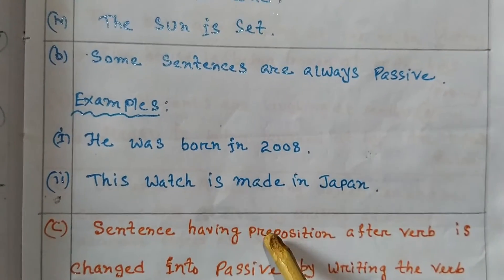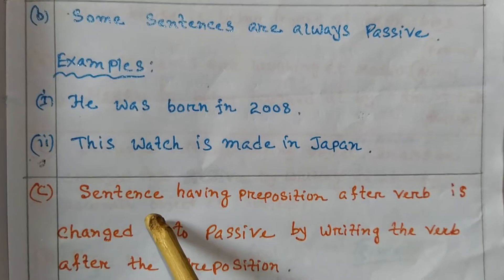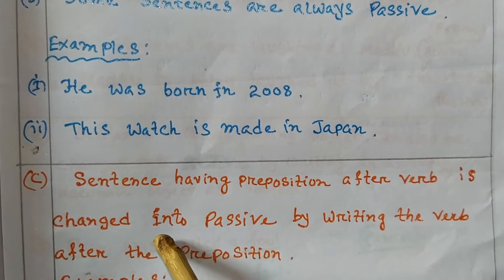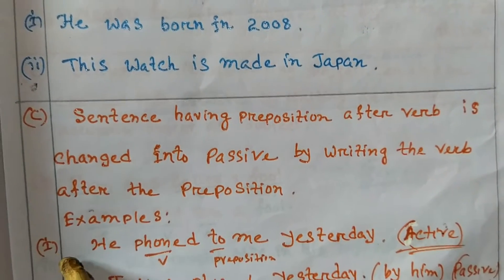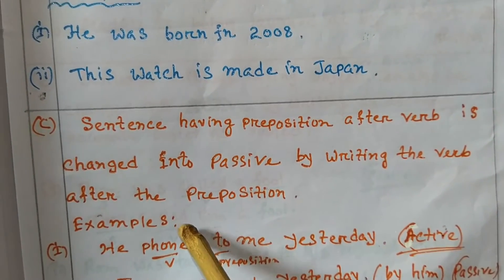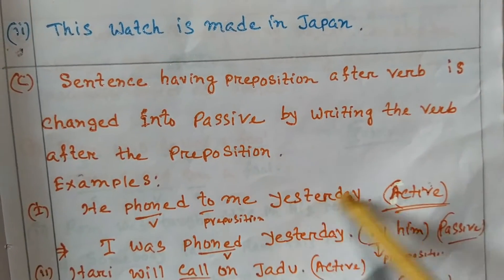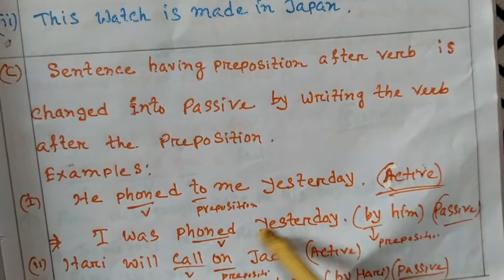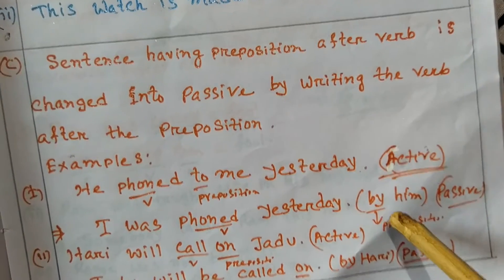Number C: sentences having a preposition after the verb are changed into passive by writing the verb along with its preposition. Example Number 1: 'He found to me yesterday' — active voice. Here 'found' is the verb and 'to' is the preposition. In passive voice: 'I was found yesterday by him' — passive voice. The preposition 'by' is retained with the verb.